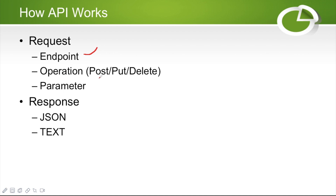Then there are operations — PUT, POST, DELETE, and others. These define what you are trying to do. If you are creating a record, it should be a POST method. Whenever you are creating a post on Facebook, that is the POST method. Updating a post is the PUT method. Deleting something on Facebook is the DELETE method. We also have the GET method where we retrieve data from Facebook.